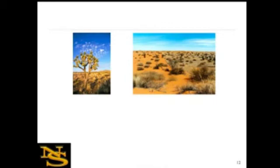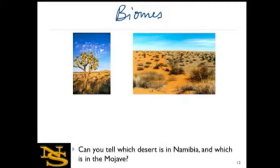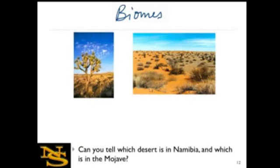Now some ecosystems around the world have generally the same kinds of abiotic and biotic components. So we call those similar ecosystems around the world biomes. In this case, you're seeing two deserts in different parts of the world. Can you tell which is in Namibia and which is in the Mojave Desert of California? It's hard to tell, right?